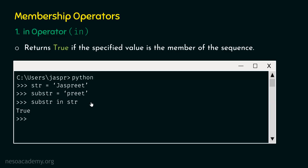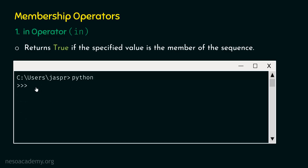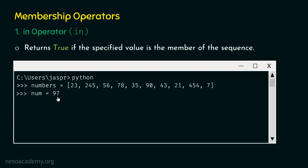If we hit enter, we get true as a result because the string 'preet' is part of the string 'justpreet'. The In Operator checks whether the specified value is a member of the sequence. Now let's consider one more example using a list. Type: numbers = [23, 245, 56, 78, ...], then num = 97. Now type: num in numbers. Is 97 a member of this list? No — so we will get false as a result.